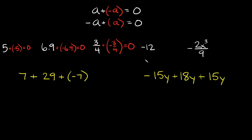Here we have negative 12. So what's the opposite of negative 12? Well, that would be positive 12. So we're going to add positive 12, and then negative 12 plus positive 12 is equal to 0.